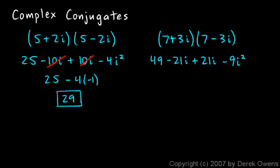And notice the minus 21i and the plus 21i cancel out, and I'm left with 49 minus 9 times negative 1, because my i squared here is equal to negative 1. So this is 49 plus 9, which is equal to 58. Once again, I end up with a real number as my answer.